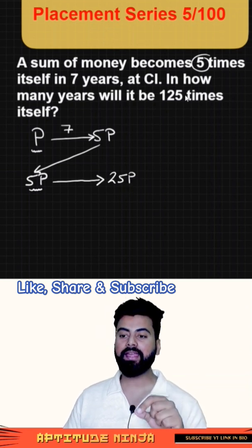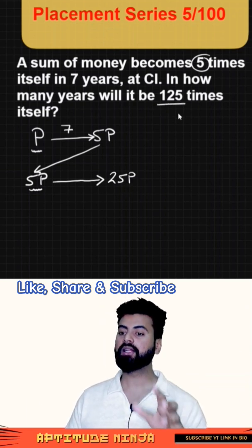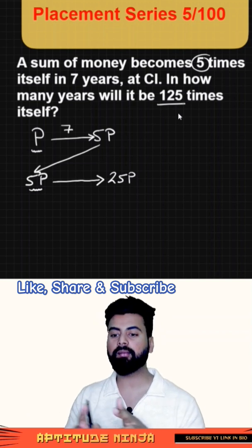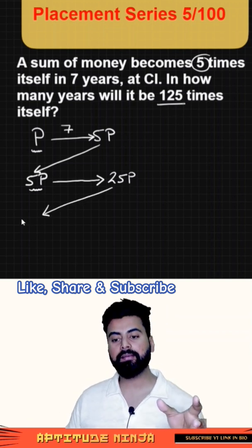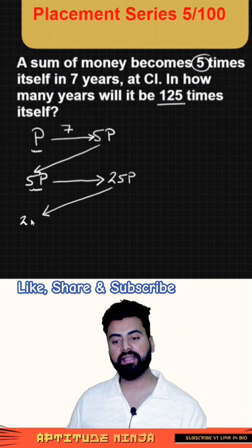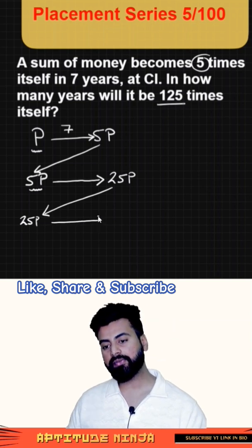Shall I stop at 25? No. Why? Because our goal state is 125. So until it becomes 125, we will not stop. Let's move forward. For the next compounding period, my new principal is going to be 25P. Again, calculate 5 times of it. And now you would reach to the goal state, which was 125.